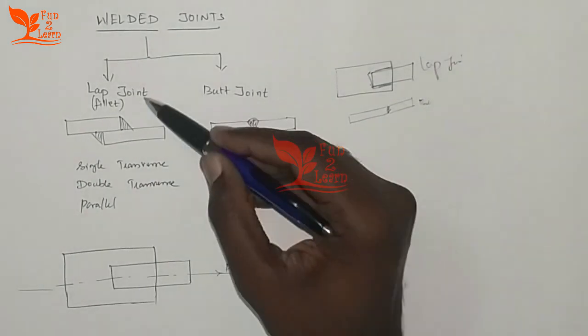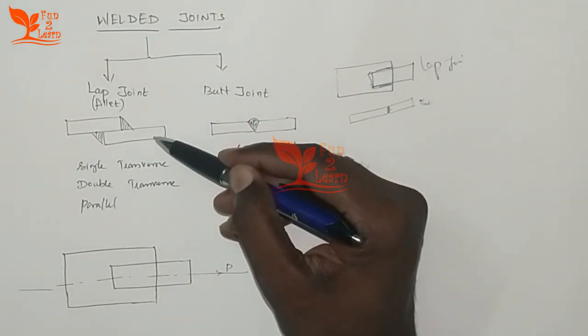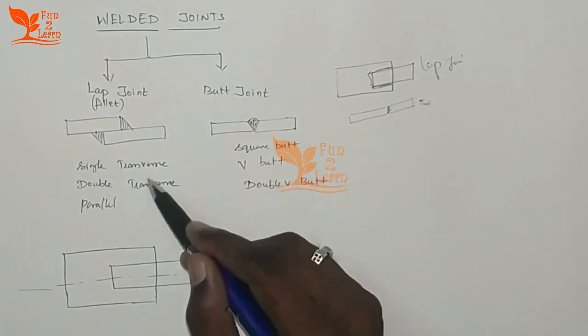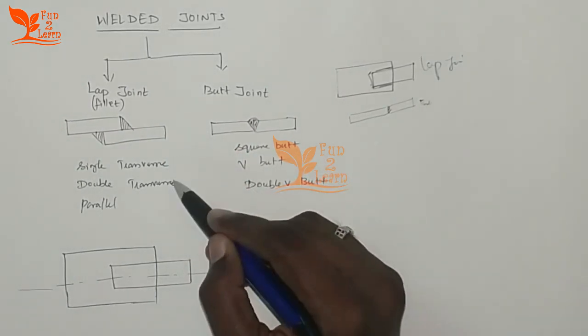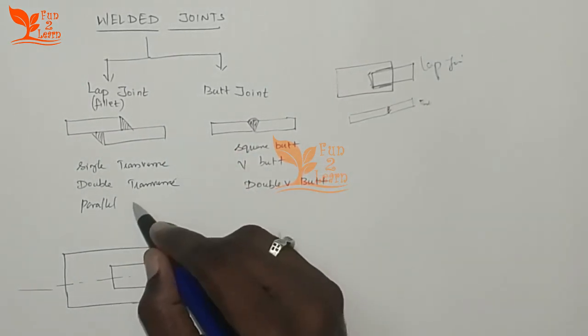Now we need a deeper classification of the lap joint. The sub-types are: Single Transverse Weld, Double Transverse Weld, and Parallel Weld.